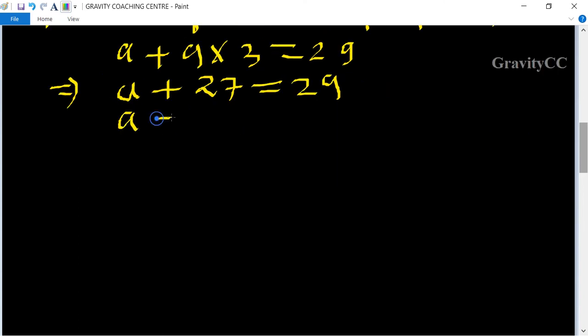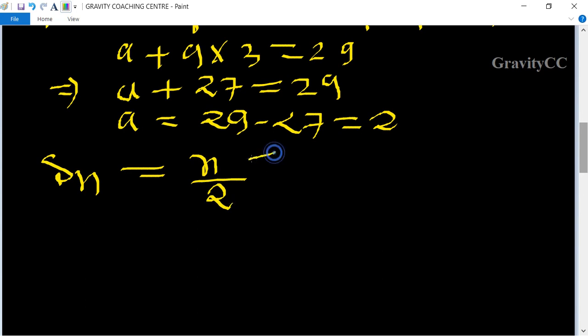So a = 29 - 27 = 2. And we know that the formula of Sₙ = (n/2)[2a + (n-1)d].